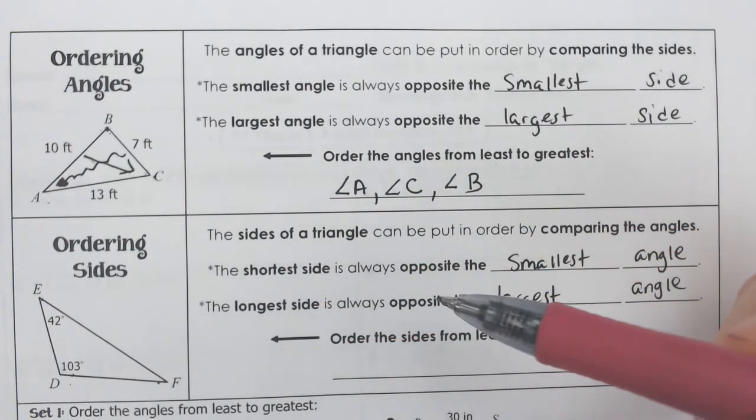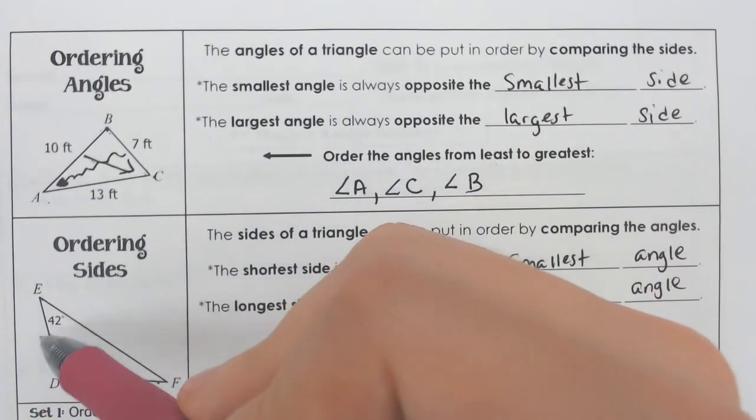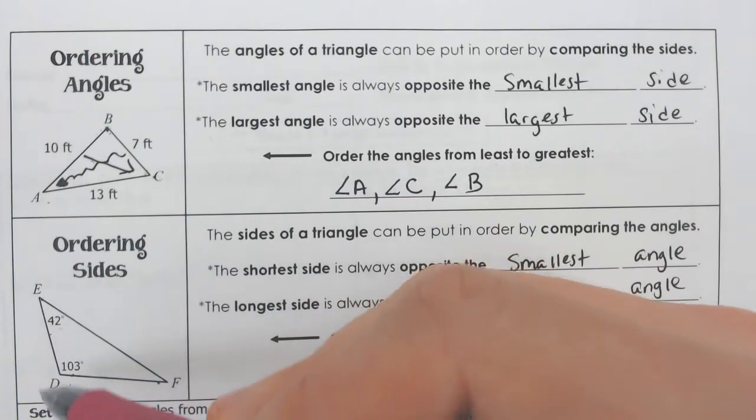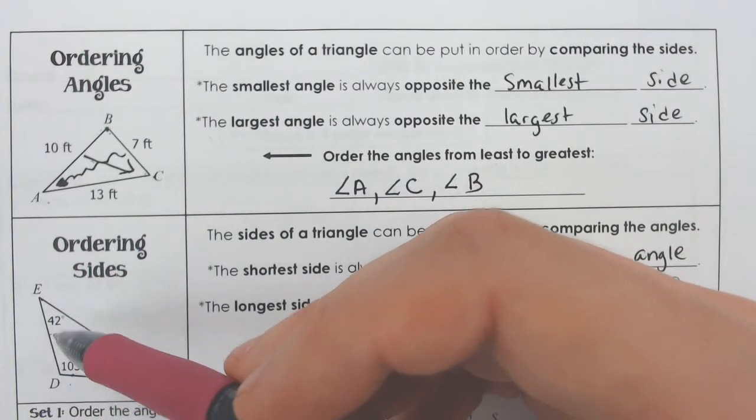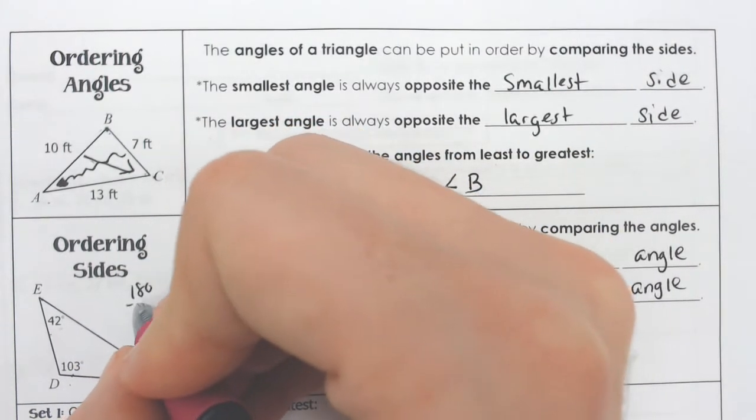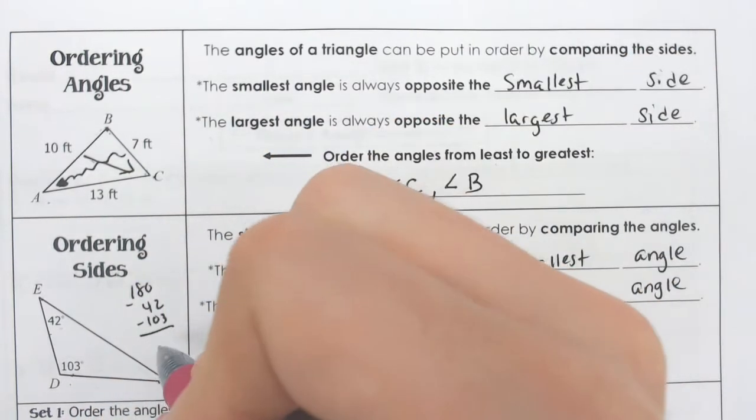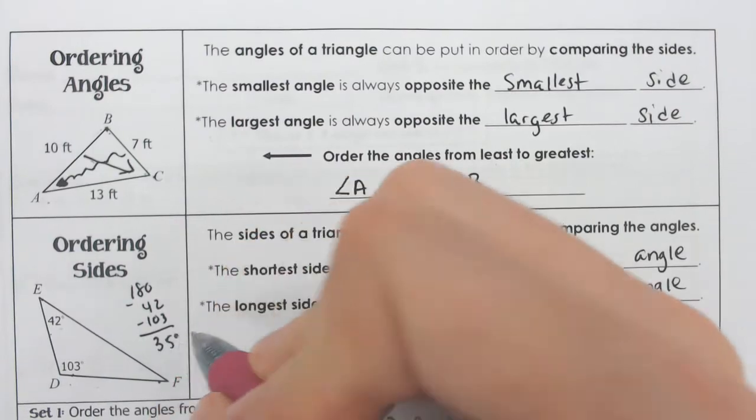So we have two angles provided, which we can find the third. If you have two angles in a triangle, you can always find the third by taking these away from 180. And if we did that, we would have 180 take away the 42 and the 103, and when you do that, you would get 35 degrees.